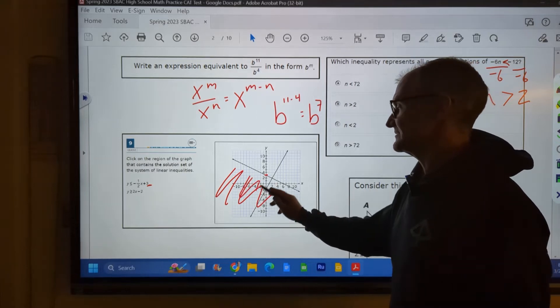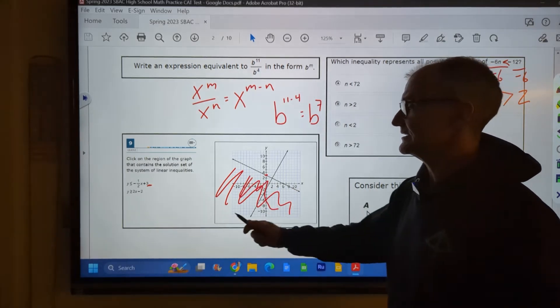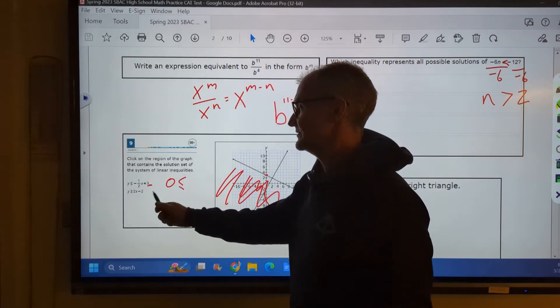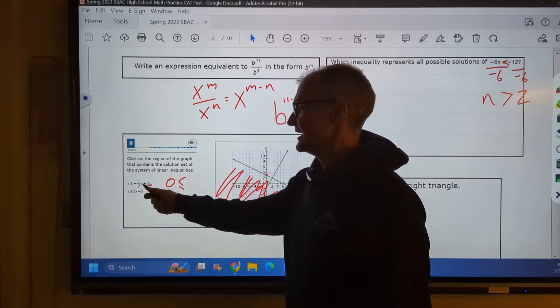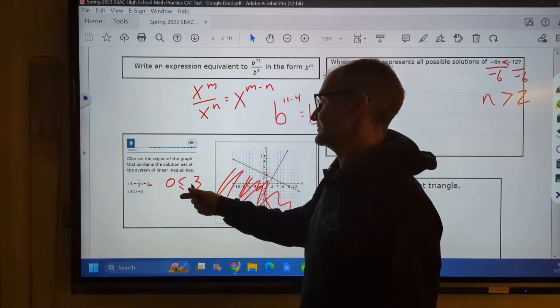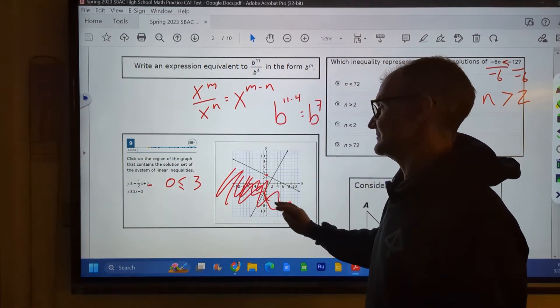Let me just double check that. I'll pick a point in that solution set like 0, 0 and plug it in. 0 would have to be less than or equal to negative 1 half times 0, 0 plus 3. Is 0 less than or equal to 3? Yes, it is. So I shaded that correctly.